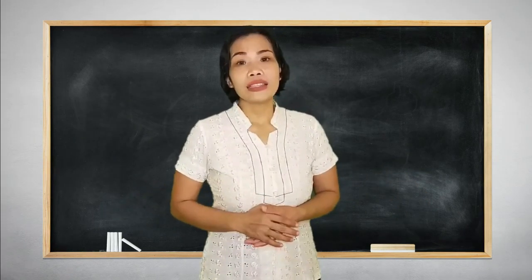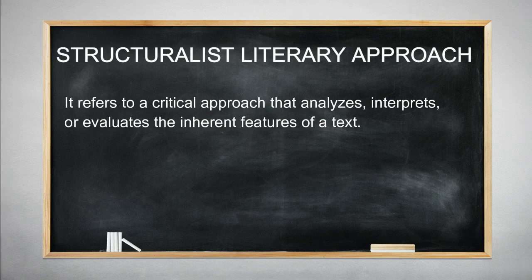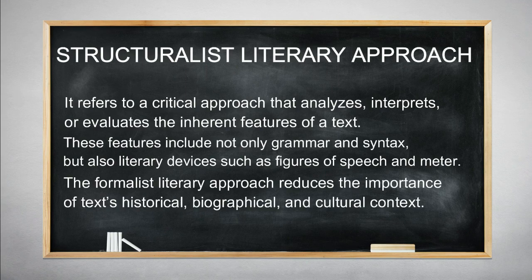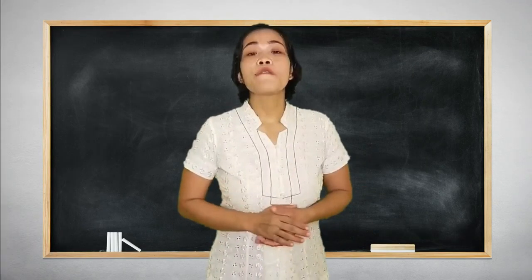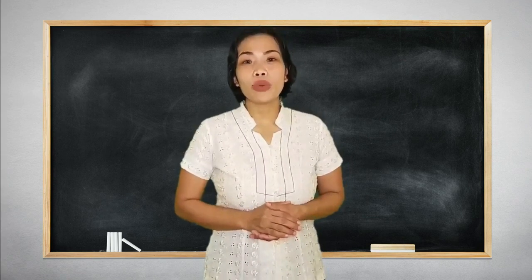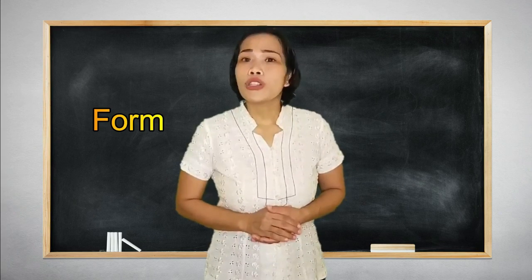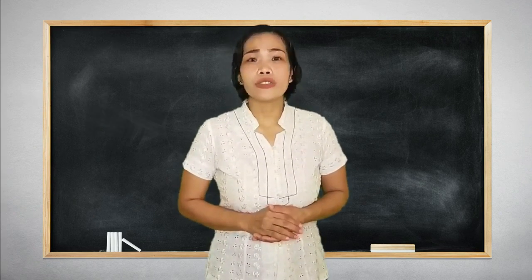So what is the formalist literary approach? It refers to a critical approach that analyzes, interprets, or evaluates the inherent features of a text. These features include not only grammar and syntax, but also literary devices such as figures of speech and meter. In other words, formalist literary approach is concerned only with the form and sets aside all other aspects such as cultural, biographical, and historical aspects.